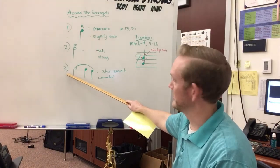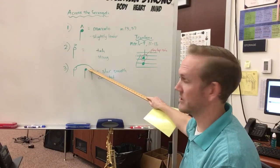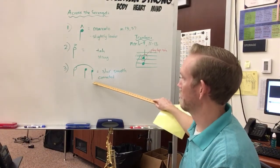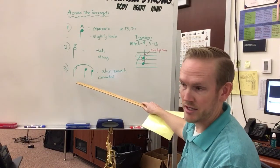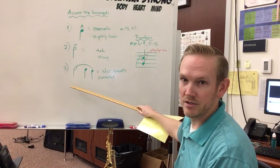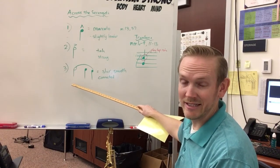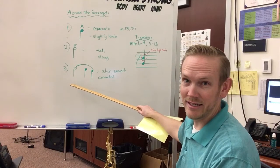Next thing is these smooth connected parts. You've got that slurred line. You want to make sure that those notes are nice and smooth. On trombone that means you're using a light D tongue.